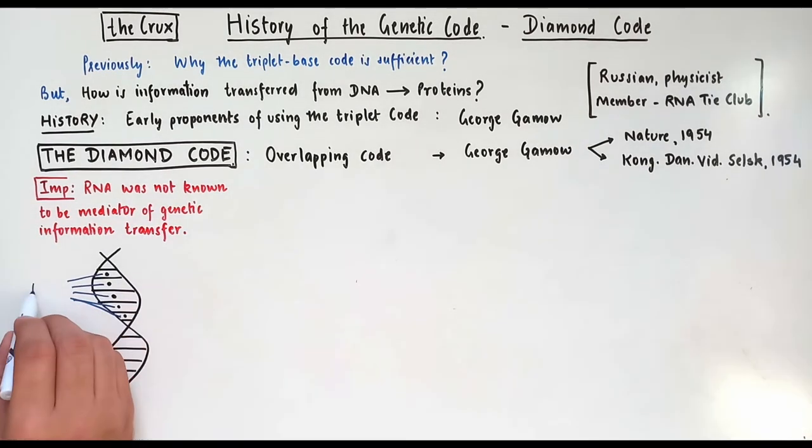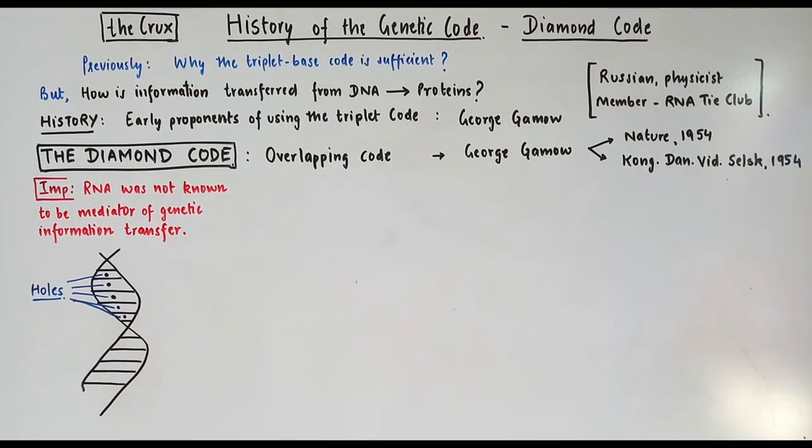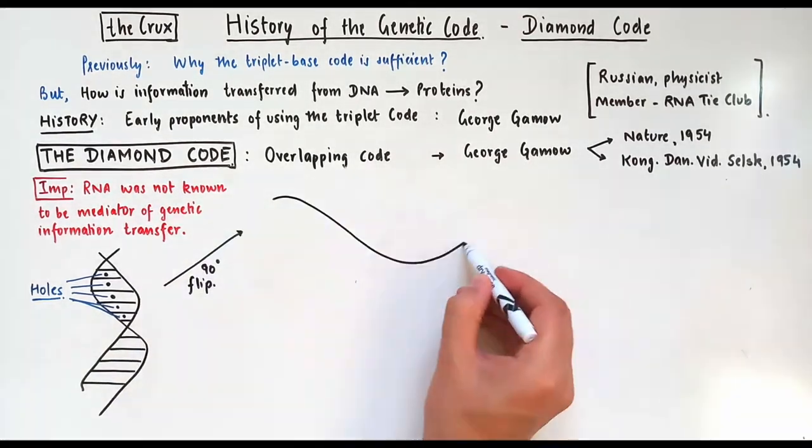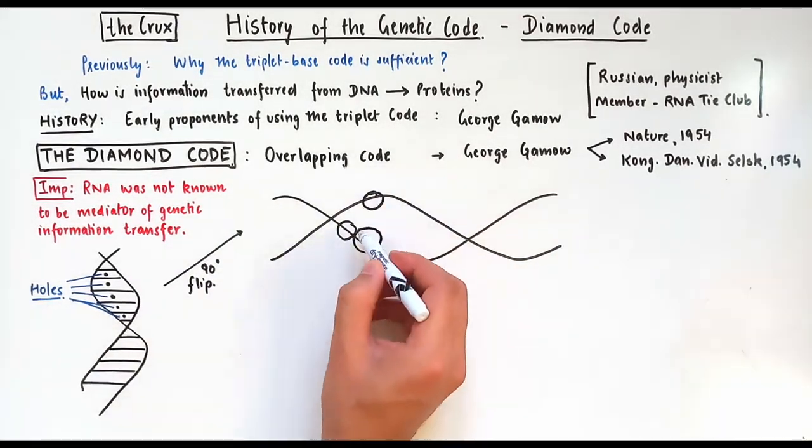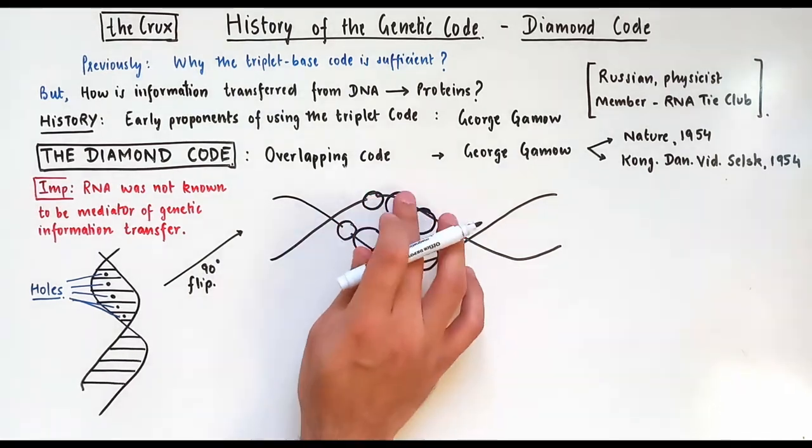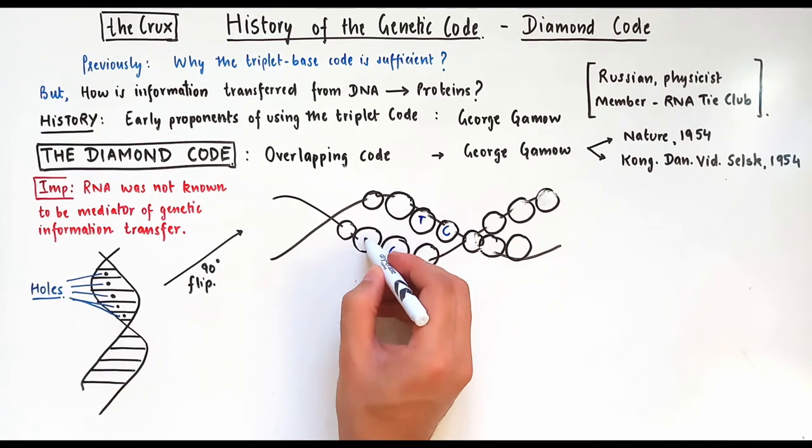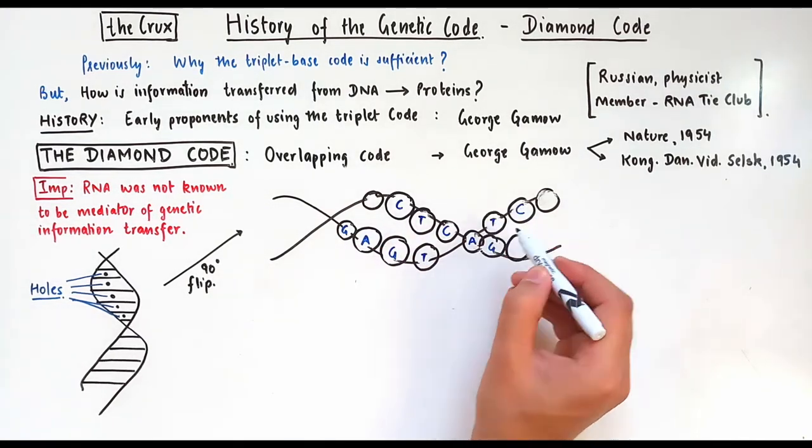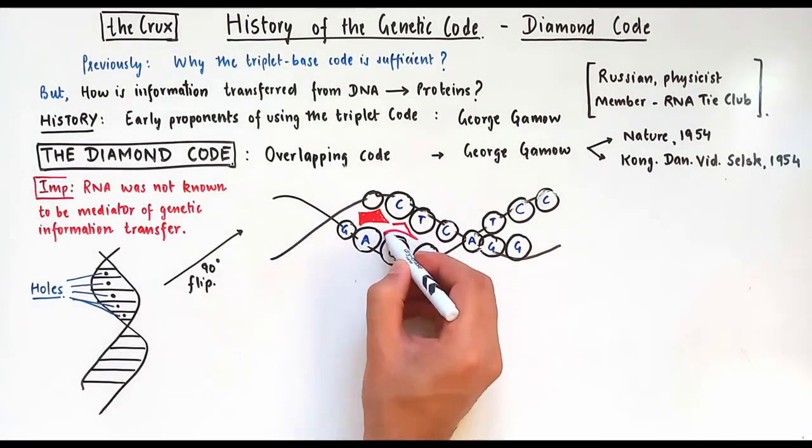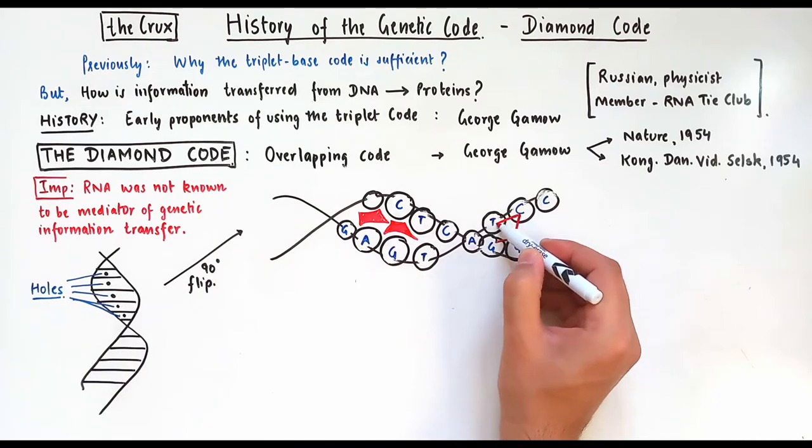To get a picture in more detail, let's flip our DNA 90 degrees to the right. Now, if we carefully look at the structure of base pair along the DNA, we find that these spaces have holes. As you may have already noticed that these holes are rhombus-shaped, almost like a diamond.